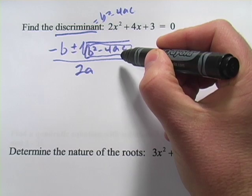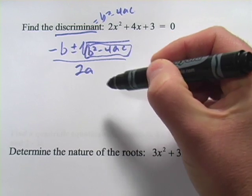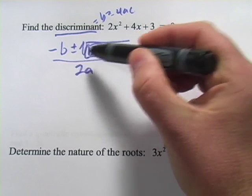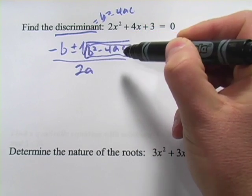You could have a negative number under there. If that's the case, you're going to have two imaginary or complex solutions. So you've got the plus or minus, you're going to have two imaginary solutions.